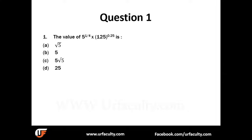Okay, moving on to the first question: find the value of five to the power of one-by-four multiplied by 125 to the power of 0.25. The basic thing you need to understand in surds and indices is that if a value is given as five to the power of one-by-four, this is also equal to one over five to the power of minus one-by-four.